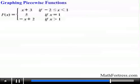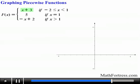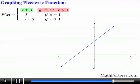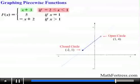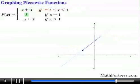Let's try one with three distinct functions: f(x) = x + 3 if -2 ≤ x < 1; 5 if x = 1; and -x + 2 if x > 1. First, graph x + 3 — a line with slope 1 and y-intercept 3. Apply the restriction: closed circle at x = -2, open circle at x = 1, erasing everything outside that interval.